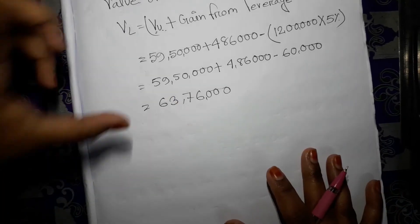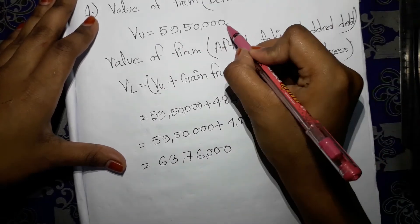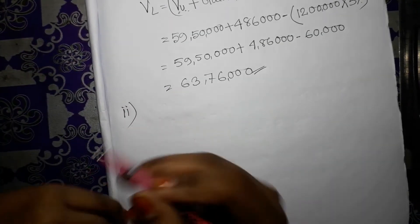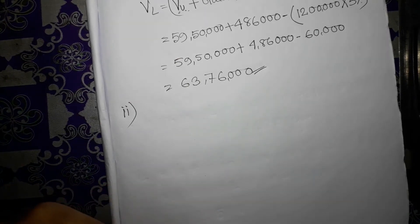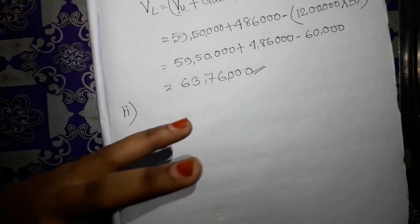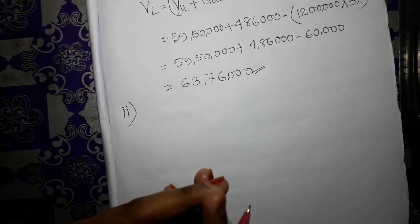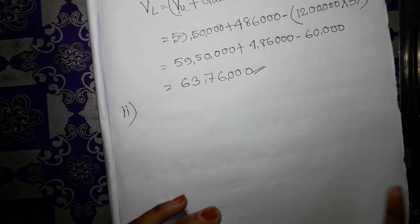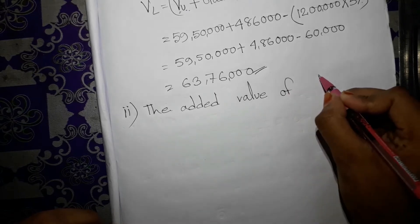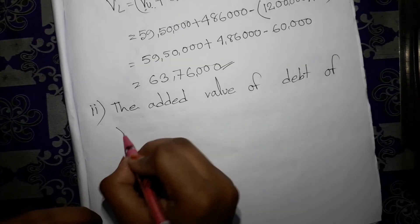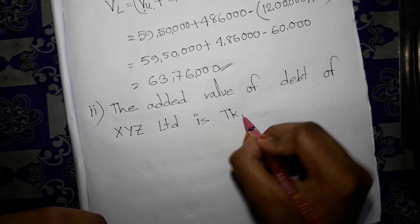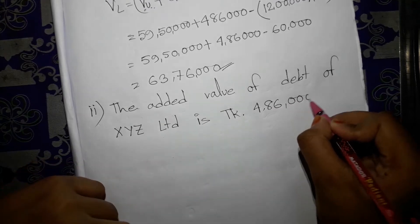So our firm value before debt was calculated as VU. Now the value after debt — the added value of debt for XYZ Limited — the company's debt (bond) value is 4,06,000 taka (approximately 4 lakhs 6 thousand).